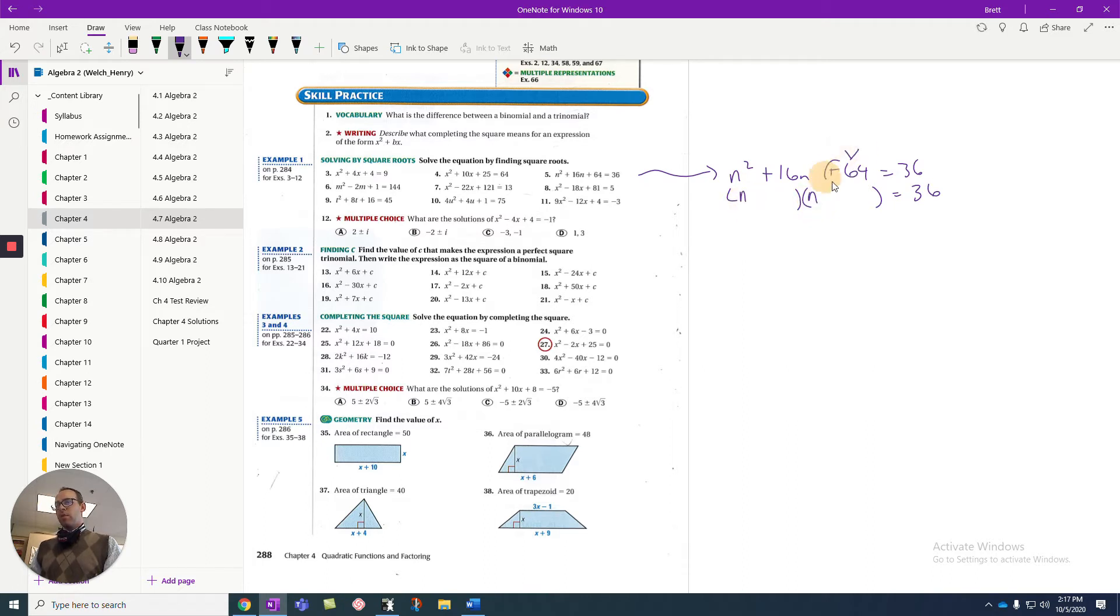How do we split a 64 so it adds up to 16? This is going to be the square root. So it's going to go to 8 and 8, and the 64 is positive, so my signs have to match. In order to get a positive 16, I need plus and plus.